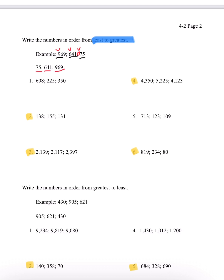I'm going to be going over numbers 2, 3, 4, and 6. Number 2, we have 138, 155, and 131. The front digits are all 1s, so let's look at the next digits — we have a 3, 5, and 3. Since 5 is the greatest, 155 will be last. For the two 3s, we look further at the last digits: an 8 and a 1. Since 8 is greater than 1, 131 is our least number. So the order is 131, 138, and 155.